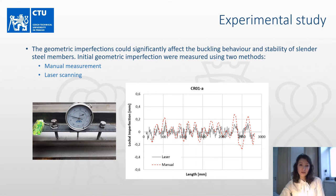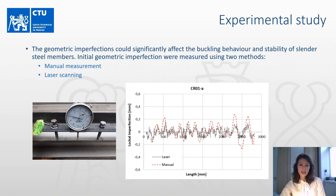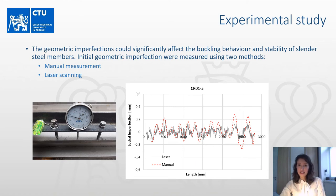Real structural steel members have initial geometric imperfections as a result of manufacturing and assembling processes. Geometric imperfections can significantly affect the buckling behavior and stability of slender steel members. Therefore, the initial geometric imperfections were measured using two methods: manual measurements and laser scanning. The measurement results were compared, and it can be seen that the laser scanner measurement contains some noise, but overall the curve matches well the manual measurements.